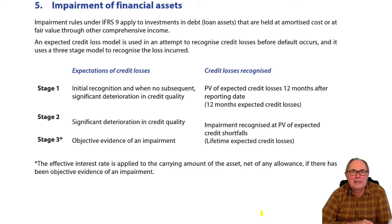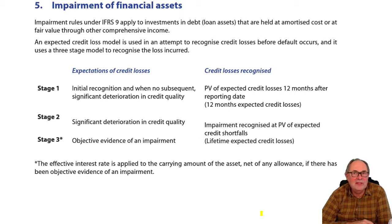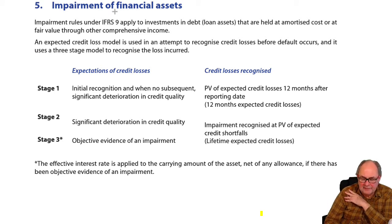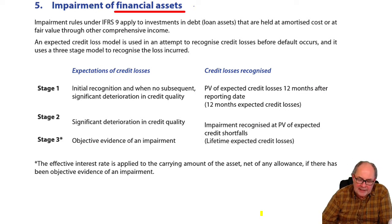Impairment is next. As my old mum used to say, what goes up must go down. Unfortunately, sometimes financial assets need to be written down because the person to whom you've lent the money, or your customer, is simply not going to pay. If I was explaining this to someone on a bus, it's simply about bad debts.